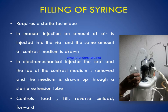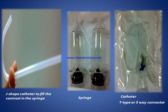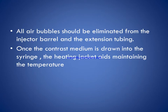Filling of the syringe is the procedure or technique to fill the syringe. A sterile technique is used. In case of manual injection, a certain amount of air is injected into the vial and the same amount of contrast medium is drawn in. In the electromechanical injector, the seal on the top of the contrast medium bottle is removed and the medium is drawn up through a sterile extension tube using controls such as fill, reverse, load, and forward. Equipment includes a J-shaped catheter to filter contrast into the syringe. All air bubbles should be eliminated from the injector barrel and extension tubing once the contrast medium is drawn in, and the heating jacket maintains the temperature.